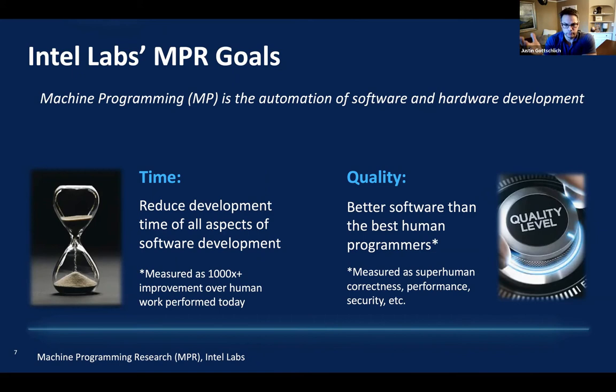It's not enough simply to improve development productivity. We also need to ensure that quality characteristics are maintained — things like correctness, performance, portability, and maintainability. Simply improving our ability to synthesize programs by 1,000x while churning out garbage programs isn't really doing much. It needs to be both simultaneously.